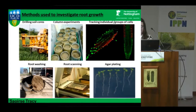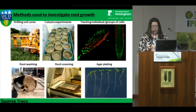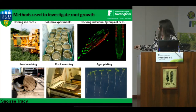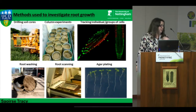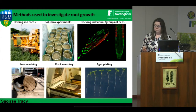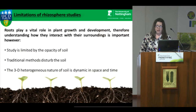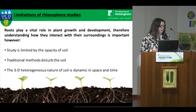Some of the methods I've used to look at roots over the years have involved drilling soil cores, sieving soil, putting them in columns, growing plants in pots, root washing, root scanning like WinRhizo, confocal microscopy, and agar plating. All of these methods have pros and cons. Methods involving roots in soil are great but typically very destructive — root washing may wash away information in the soil. Other methods give more information but without soil, making it hard to infer field responses. To overcome these challenges, another technique was needed to look at roots and soil non-destructively.